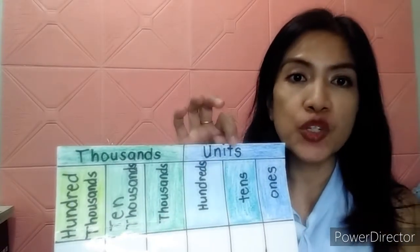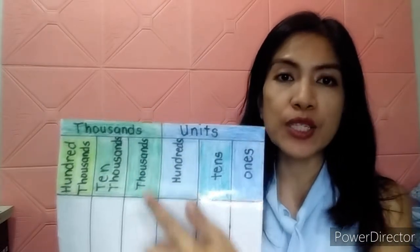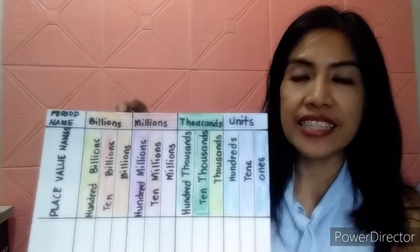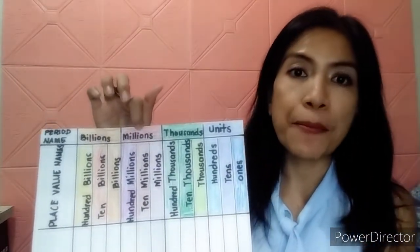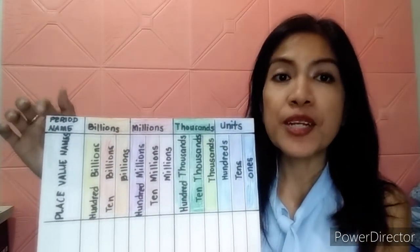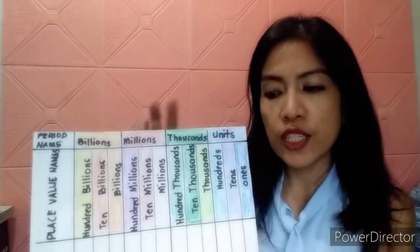This is Teacher I again. Our topic for today would be place value. For grade 3 and 4, we have units and thousands only. But if you are already in grade 5 and 6, you already have millions and billions also included in the period name.